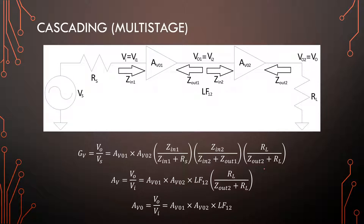This also becomes very handy in cascading or multi-stage amplifiers. Typically you won't find a single stage — it's mostly two stages. Each amplifier has input and output impedance and its own gain. When we link them together, these two amplifiers load each other: the first amplifier has an output impedance, and there will be voltage division happening into the next stage, with input and output loading factors still present.